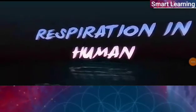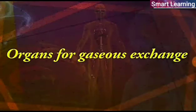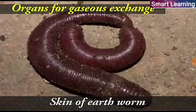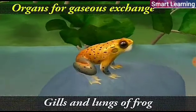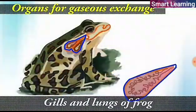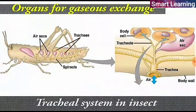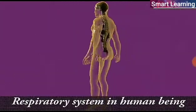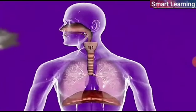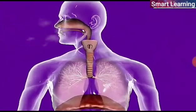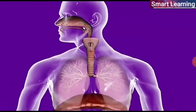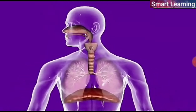Respiration in Humans: There are specific organs for gaseous exchange in different animals, such as gills in fish, skin in earthworms, gills and lungs in frogs, and tracheal systems in insects. But compared to those, the respiratory system in human beings is very complex. It consists of a mechanism for letting fresh air from outside flow into the lungs and a mechanism for expulsion of air from the lungs.